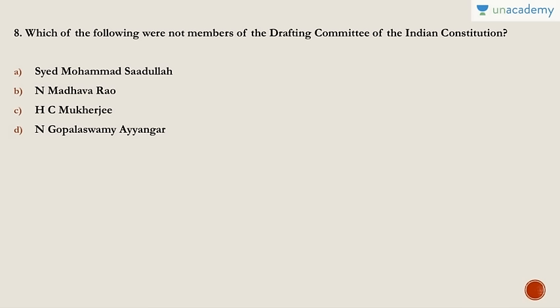Question eight: Which of the following were members of the Drafting Committee of the Indian Constitution? Members are sometimes asked in UPSC — especially which of the following are not members. You should know the seven members of the Drafting Committee: B.R. Ambedkar, Gopalaswami Iyengar, Alladi Krishnaswami Iyer, K.M. Munshi, Sayyad Muhammad Sadulla, Madhav Rao, and T.T. Krishnamachari.